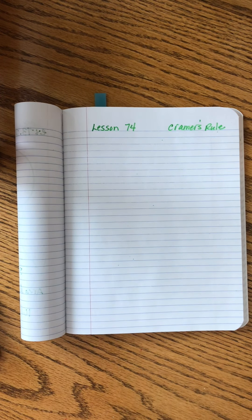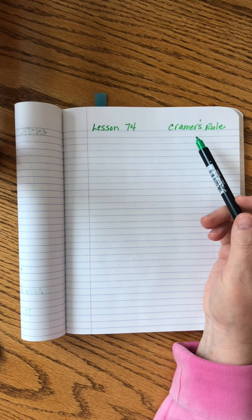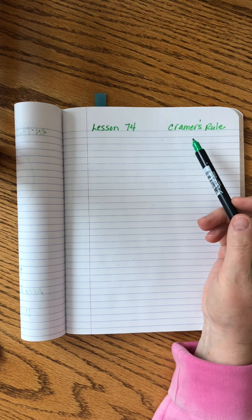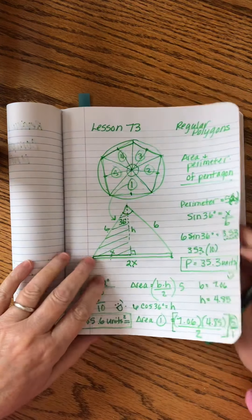Saxon Advanced Mathematics lesson 74. Our topic today is Kramer's Rule. This is a fun topic and a straightforward lesson. Before I dive in though, I just want to go back to lesson 73.